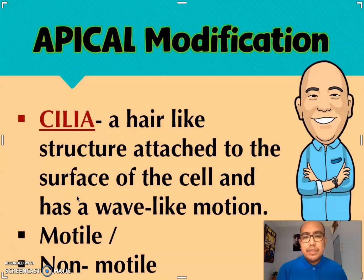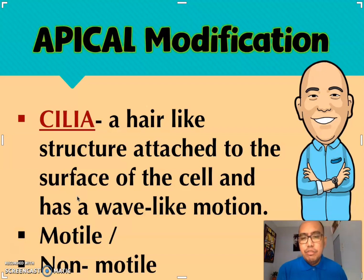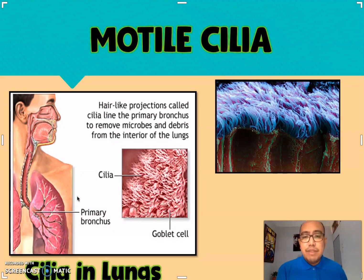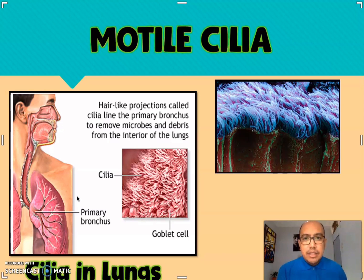Starting with the cilia — they are hair-like structures attached to the surface of the cell and have a wave-like motion. Cilia are classified into two types: motile cilia and non-motile cilia. Motile cilia are capable of movement, while non-motile cilia are not. Examples of motile cilia can be found in the lining of our lungs — hair-like projections called cilia line the primary bronchus to remove microbes and debris from the interior of the lungs.